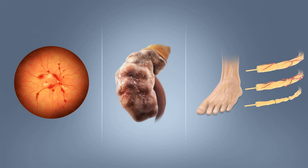There is no known preventive measure for type 1 diabetes. Type 2 diabetes, which accounts for 85-90% of all cases worldwide, can often be prevented or delayed by maintaining a normal body weight, engaging in physical activity, and eating a healthy diet. Higher levels of physical activity reduce the risk of diabetes by 28%. Dietary changes known to be effective include maintaining a diet rich in whole grains and fiber, choosing good fats such as polyunsaturated fats found in nuts, vegetable oils, and fish, and limiting sugary beverages and eating less red meat. Tobacco smoking is also associated with an increased risk of diabetes and its complications, so smoking cessation can be an important preventive measure.